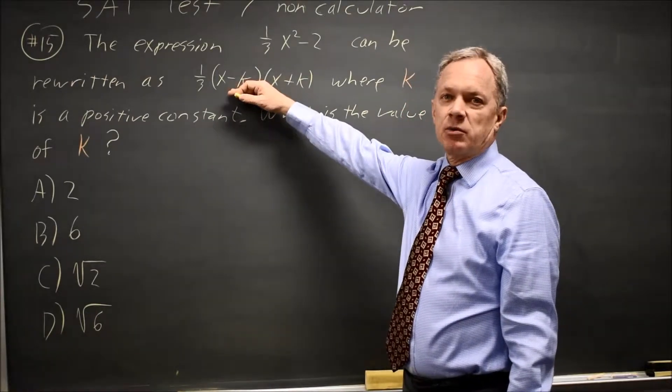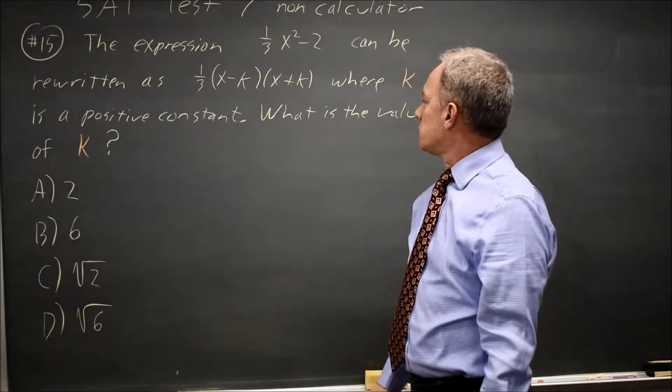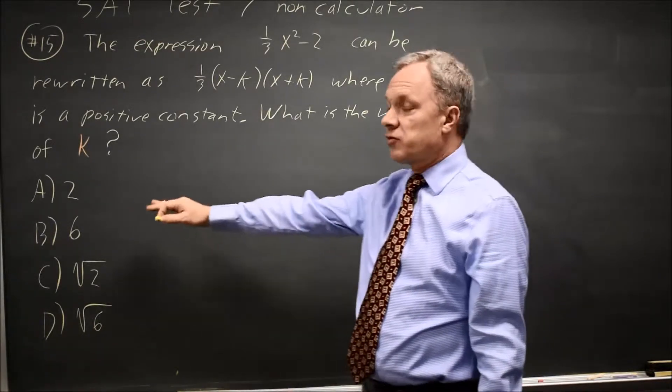They say it can be written as 1/3(x - k)(x + k). What's the value of k? And they give you four choices.